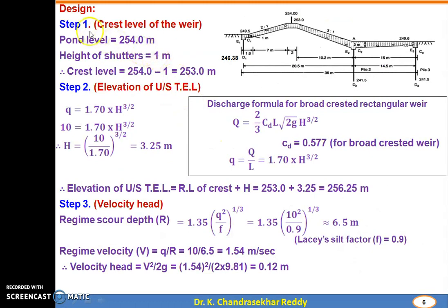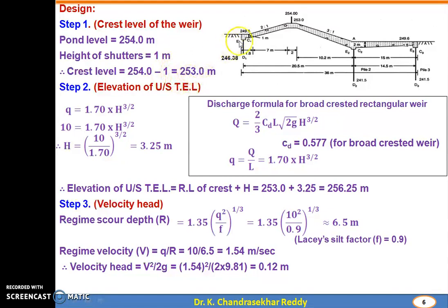Step 1: Design of crest level of the weir. Pond level is given as 254.0 m. Height of shutters is 1 m. Therefore, crest level = pond level minus height of shutters = 254 minus 1 = 253 m. So the crest level of the weir is 253 m.